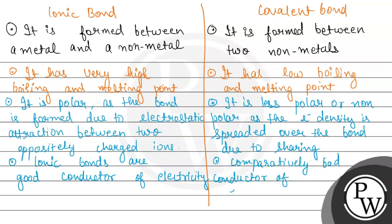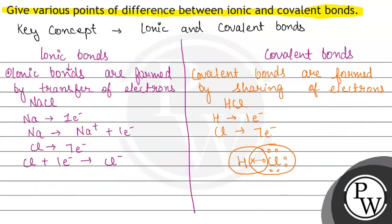Let us write some examples for both. Examples of ionic bonds: NaCl, K2SO4, etc. Examples of covalent bonds: HCl, CH3OH, etc. So this was the whole explanation and the main differences between ionic and covalent bonds. Hope the solution was understandable, thank you.